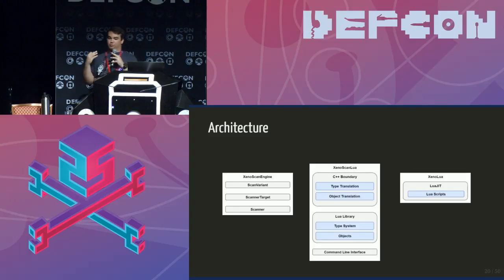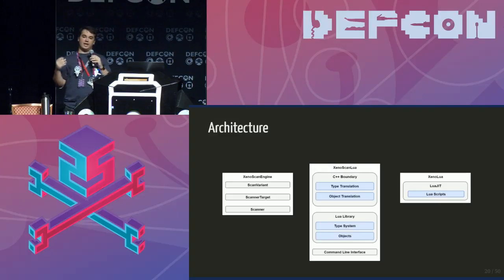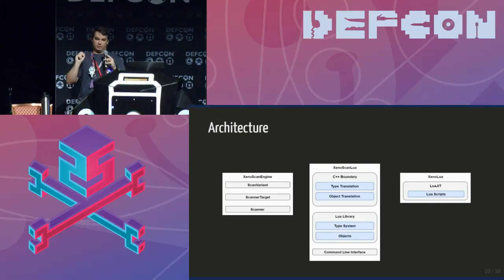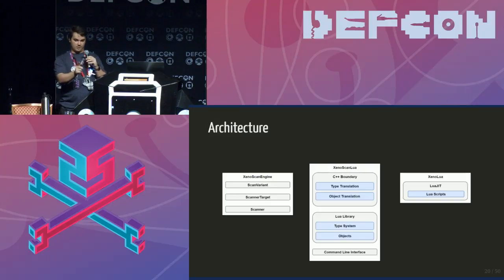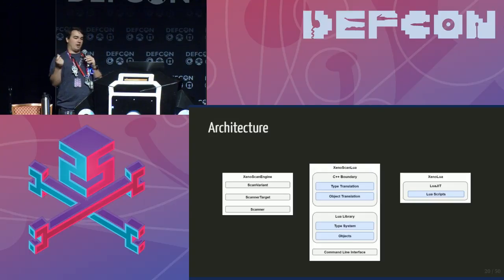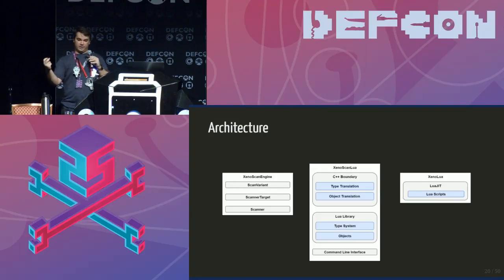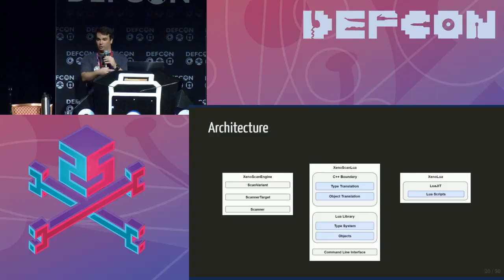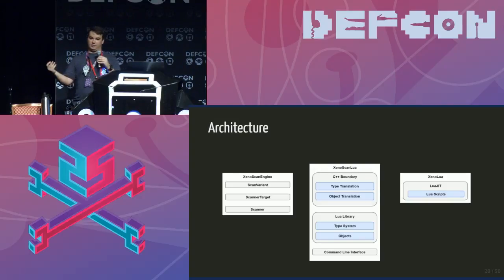The code is architected into three main projects. There's XenoscanEngine — the core scanning code, the heart of the scanner. It knows how to search for certain types of values, knows how to flip endianness, knows how to search for chunks and thread all of that. It exposes three things: a scan variant, a scan target, and a scanner. A scan variant wraps any type you might be scanning for — integers, strings, everything. The scan target is the wrapper for what you're scanning: a Windows process, a game running in an emulator, and more in the future.